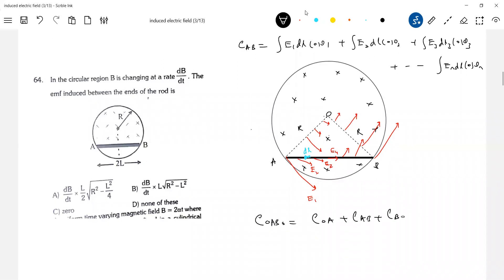This should be equal to EOA plus EAB plus EOB. Now what is EOA and EOB? This will be zero. Why zero? Because E bar is perpendicular to DL. At all points E bar is perpendicular to DL.